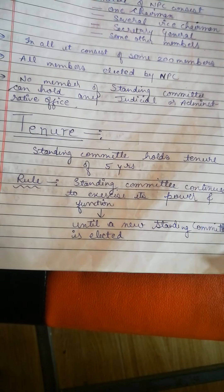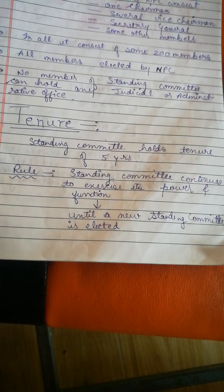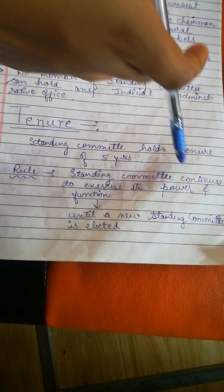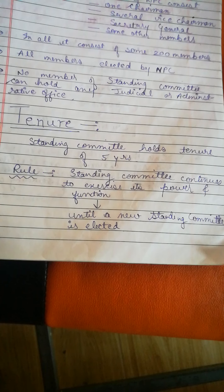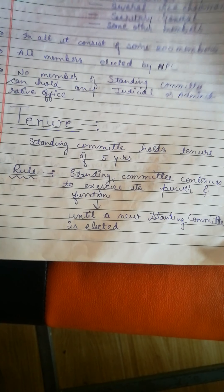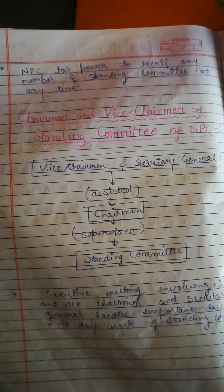The tenure of the Standing Committee is five years. The rule is that the Standing Committee continues to exercise its powers and functions until a new Standing Committee is elected. So even if elections are delayed — say by six months — the existing Standing Committee continues to work until the new Standing Committee is formed.